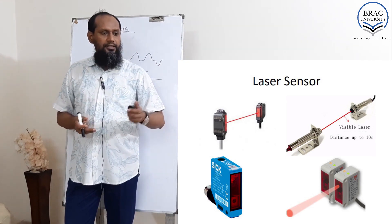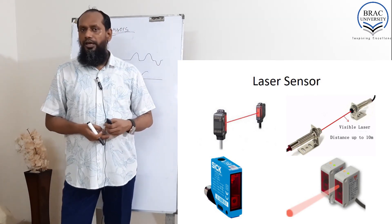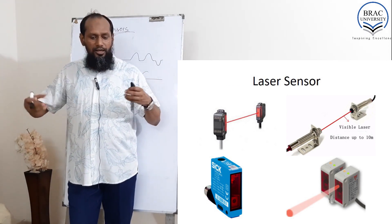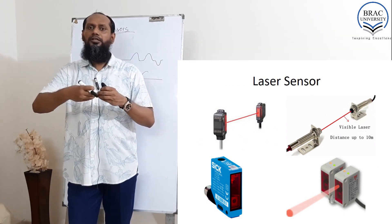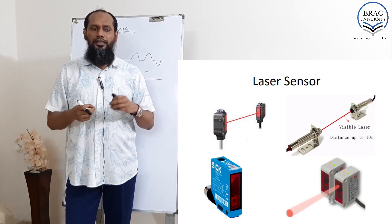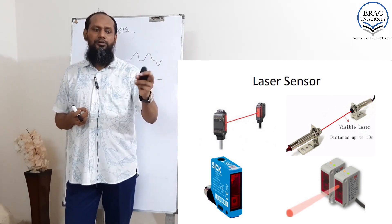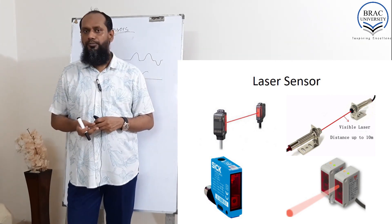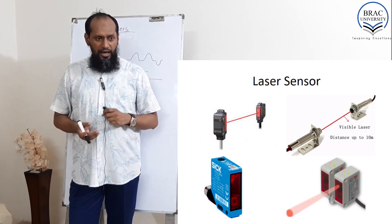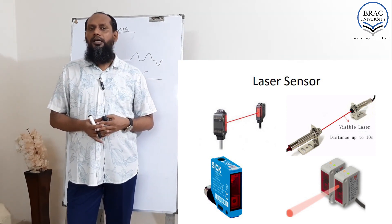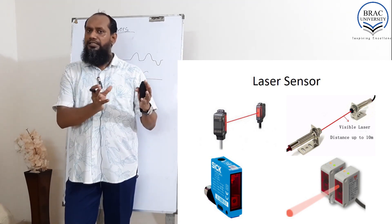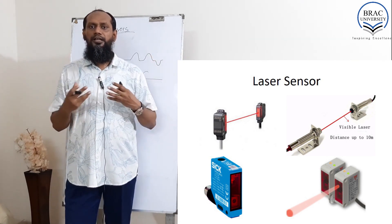Another sensor is the laser sensor, commonly used in industry. For example, on a conveyor belt, it can count how many products have been produced or passed. That concludes our sensors using the light principle.